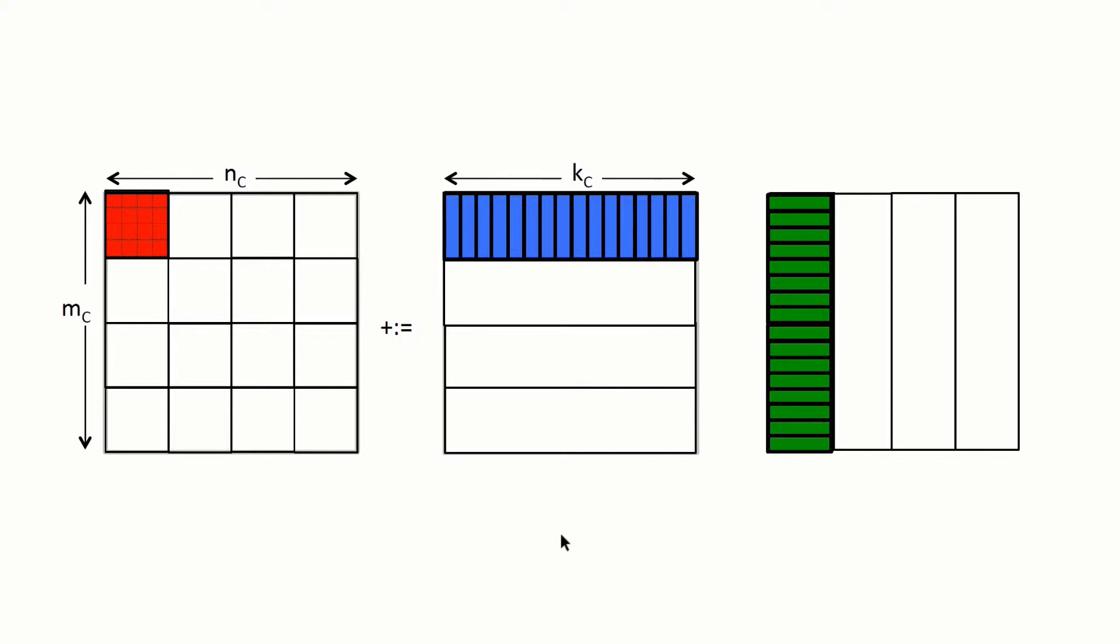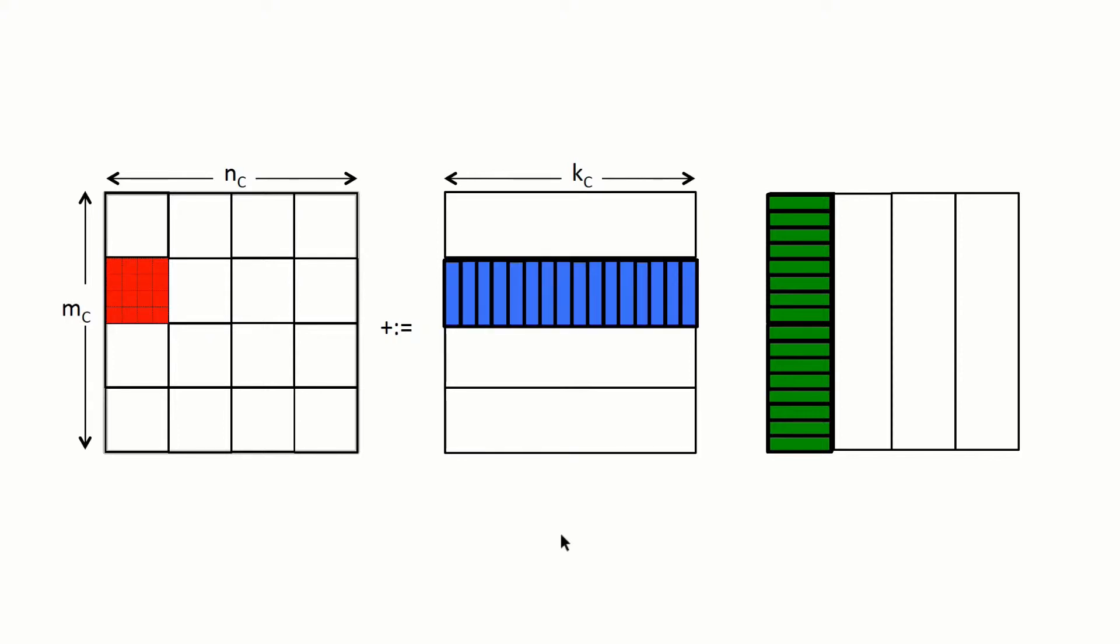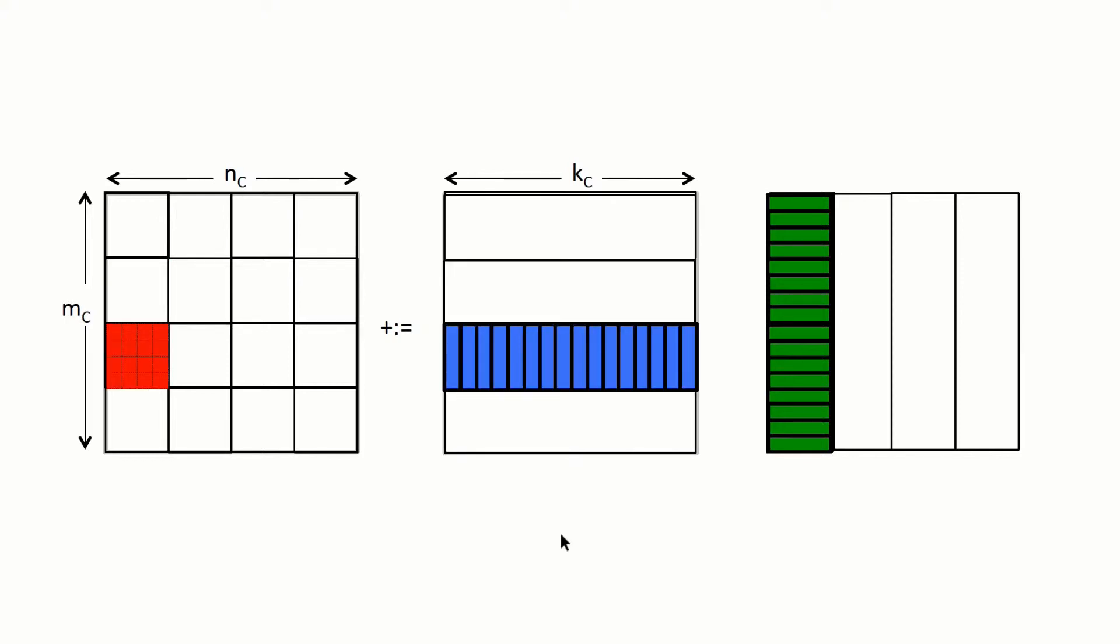If we then go to the next micro tile in the first column of C, then we will use a different micro panel of A, but the same micro panel of B. And you're starting to see the pattern.